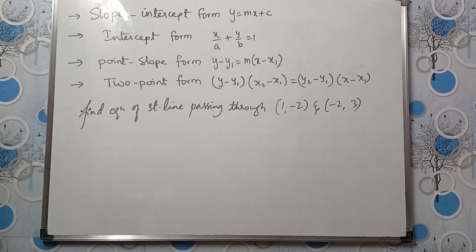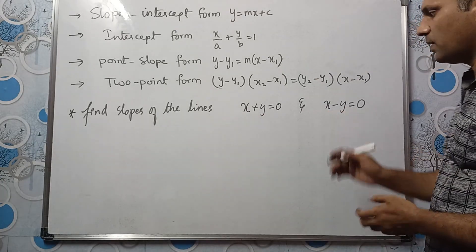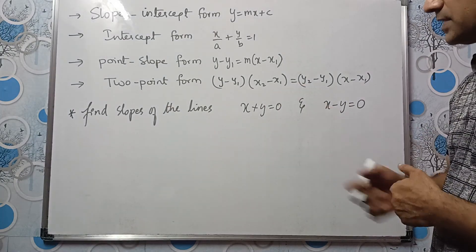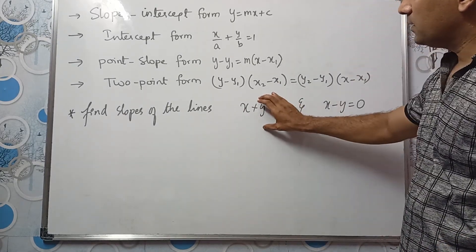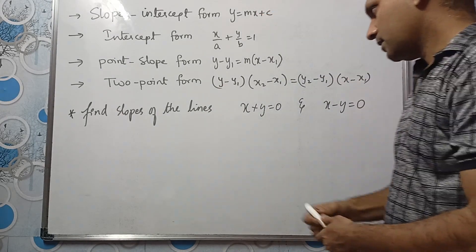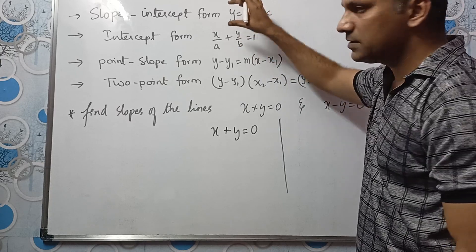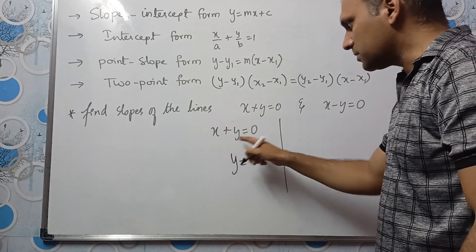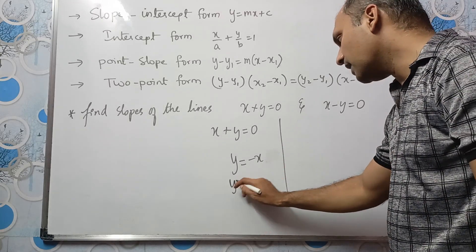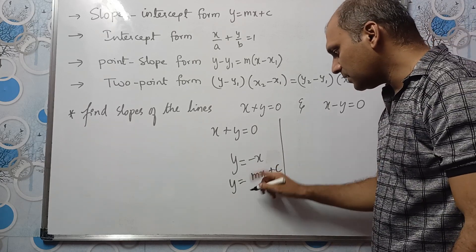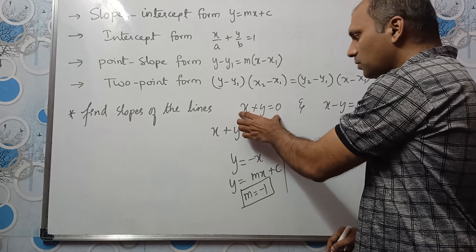Exercise: Find slopes of lines x + y = 0 and x - y = 0. For x + y = 0, write in the form y = mx + c: y = -x. So m = -1 and c = 0. The slope of this line is -1. For x - y = 0: y = x. So m = 1 and c = 0. The slope of this line is +1.